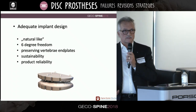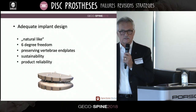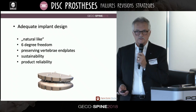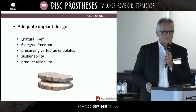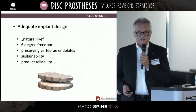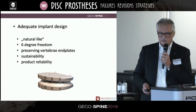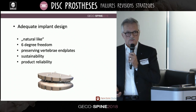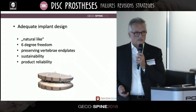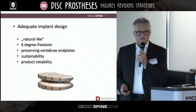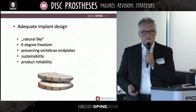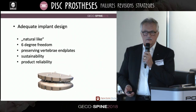We need an adequate implant design. It has to be natural-like, imitating the nature. The best we could achieve at the moment is six degrees of freedom with flexion, extension, lateral bending, compression, and translation. It should be designed preserving the very important vertebral end plates — they should not be destroyed because they are sensitive and could induce subsidence of the implant. This implant has to deliver sustainability, meaning it has to be reliable for the future and long-term aspects.